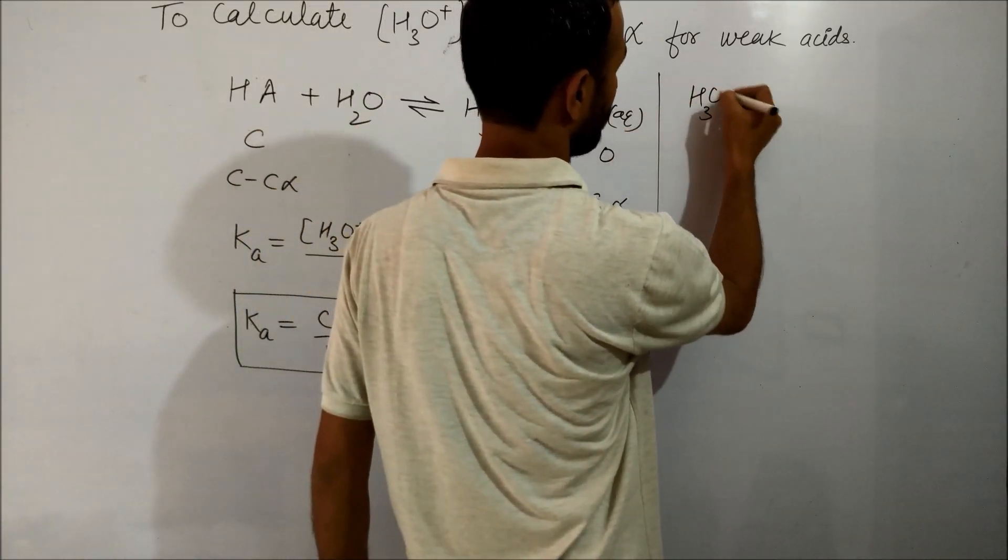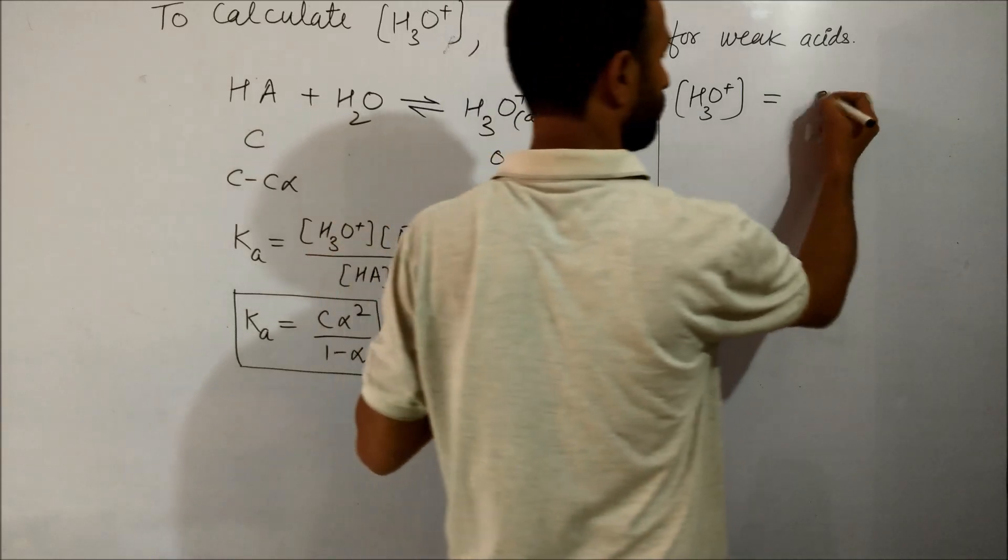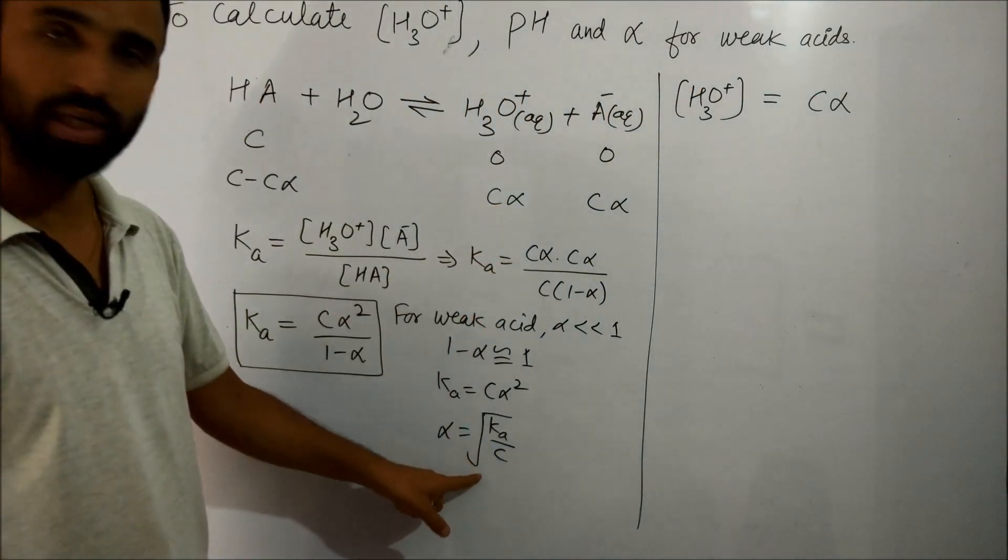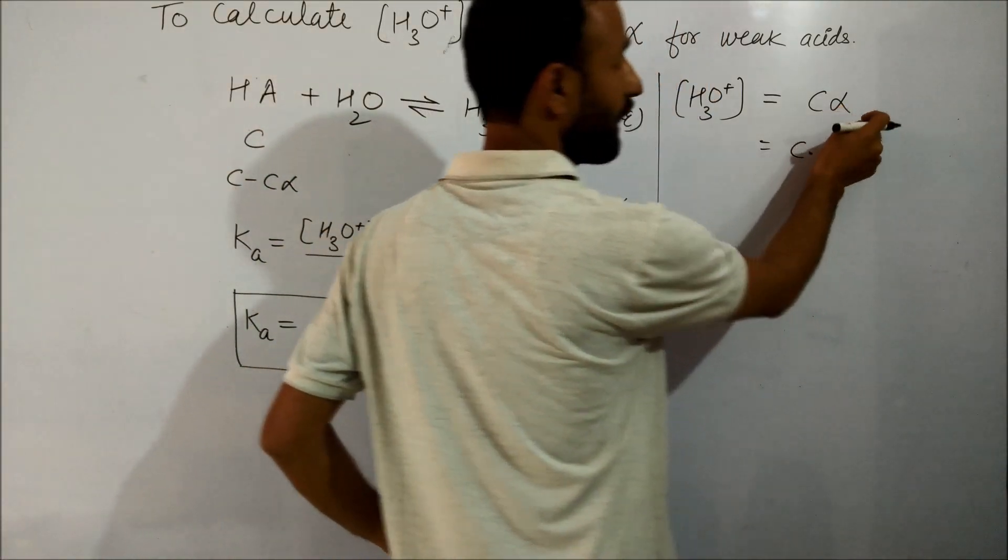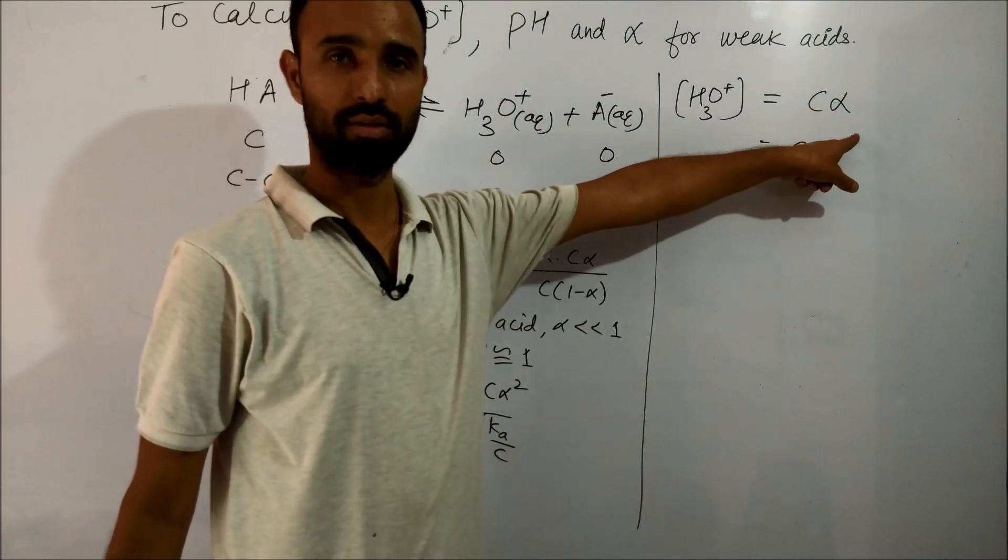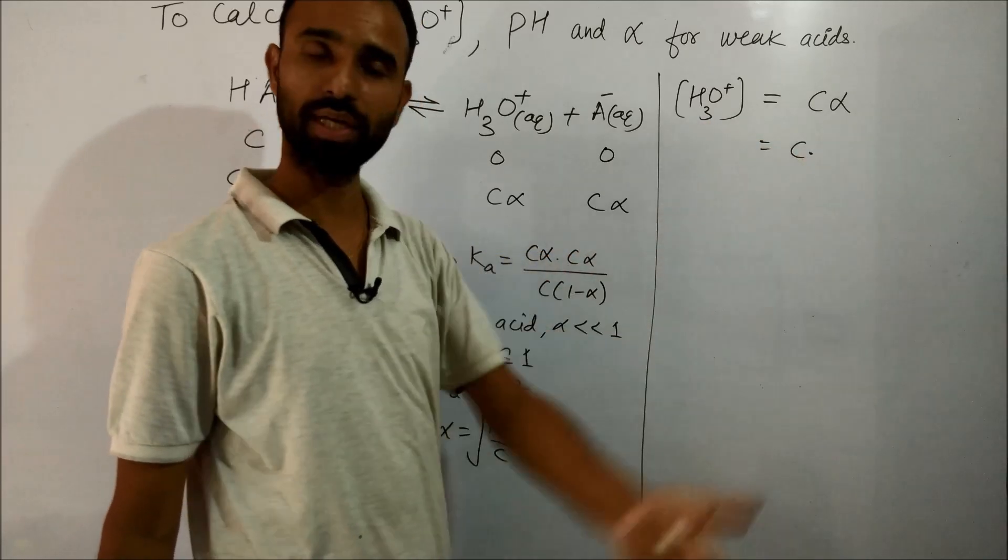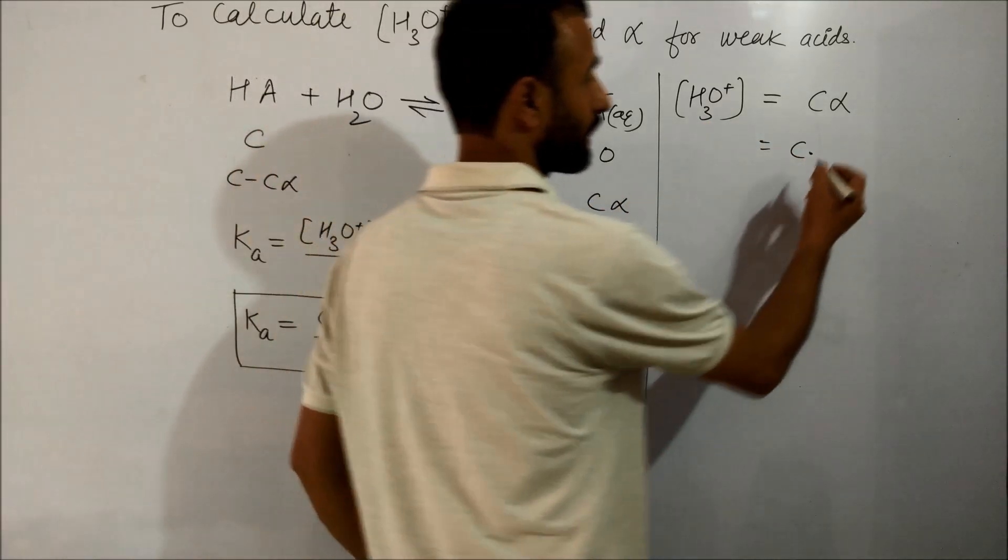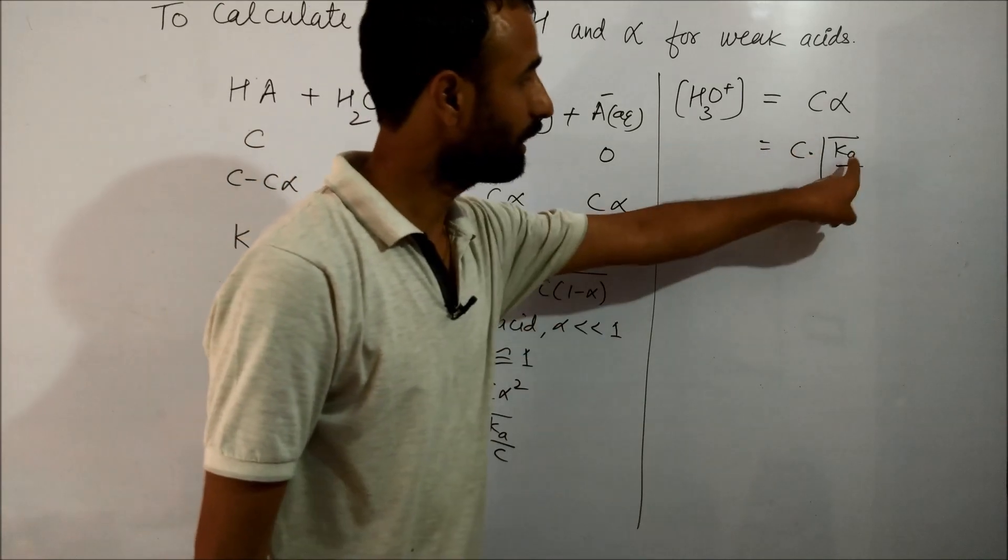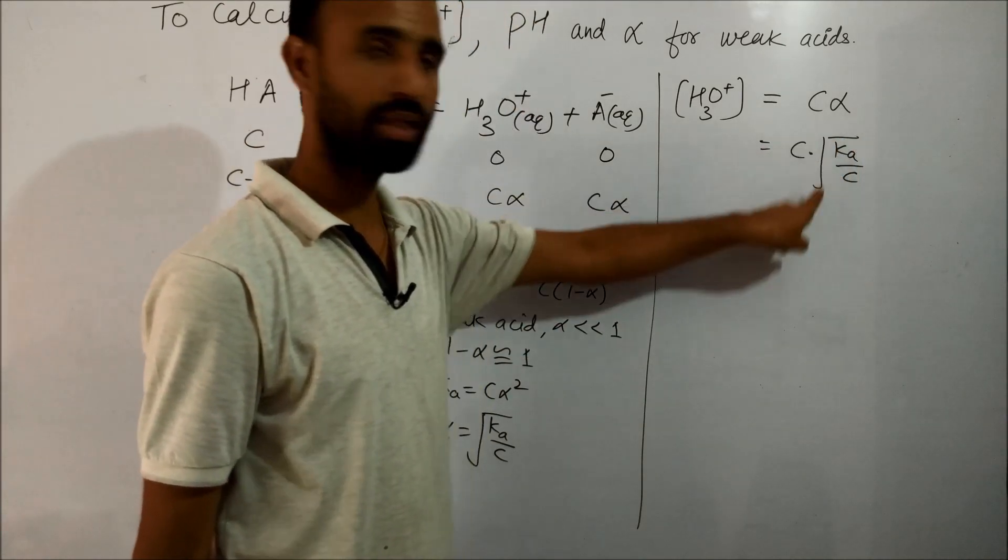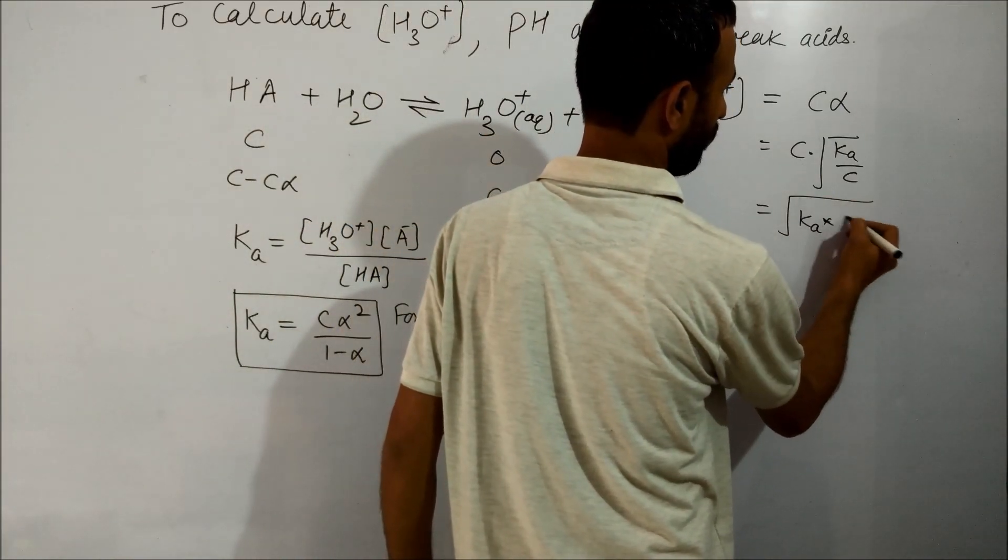Now, [H3O+] ion concentration is equal to Cα, and alpha is the square root of Ka/C. Substituting, C becomes C² inside the square bracket. So it is the square root of Ka times C.